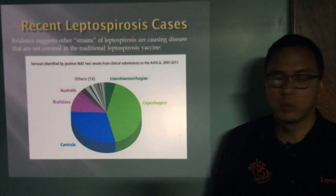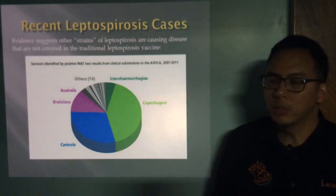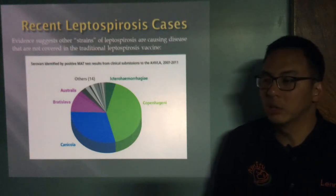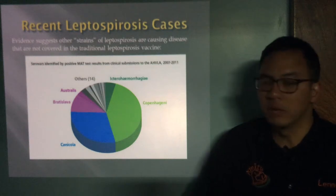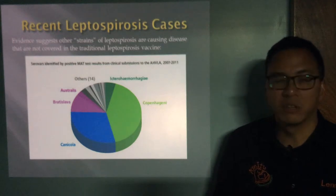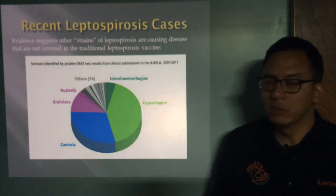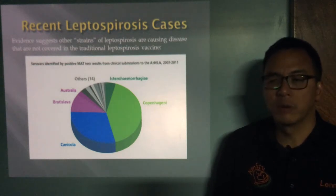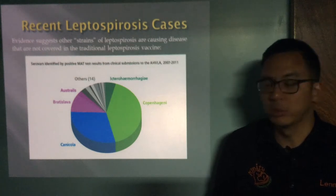Leptospirosis comes in different strains — we talk about Lepto 2 and Lepto 4. As shown in the pie chart, there are many different strains. Lepto 2 contains the traditional strains canicola and icterohaemorrhagiae. Lepto 4 includes four strains, also adding grippotyphosa and australis. There is some cross-protection but not complete. In the UK, Lepto 2 strains are most prevalent, but the extra strains are more common in Europe, so dogs traveling to Europe are highly recommended to have the Lepto 4 vaccine.